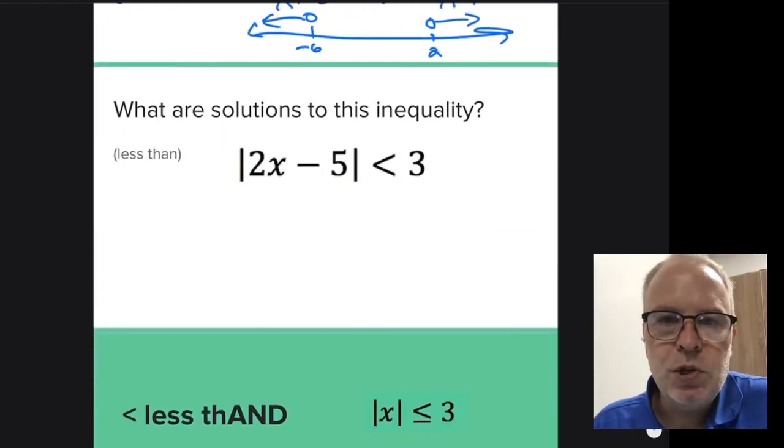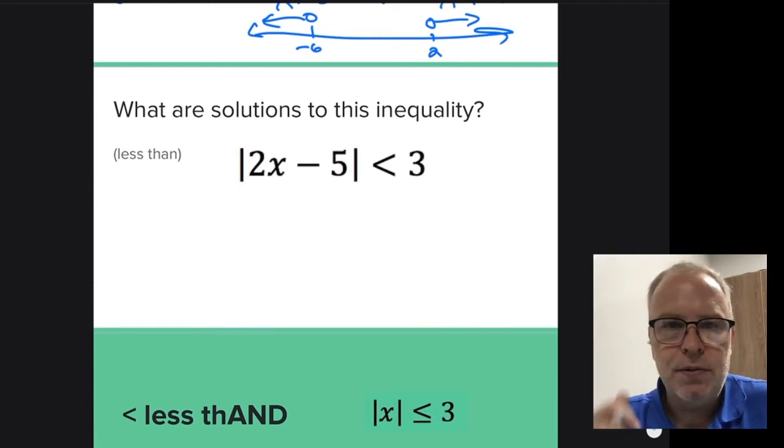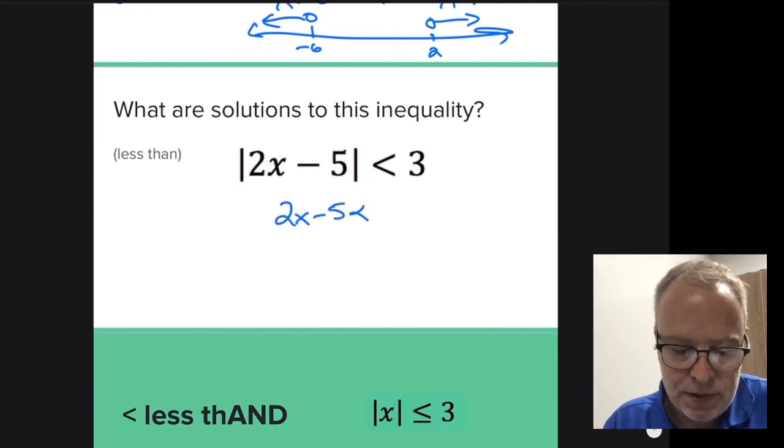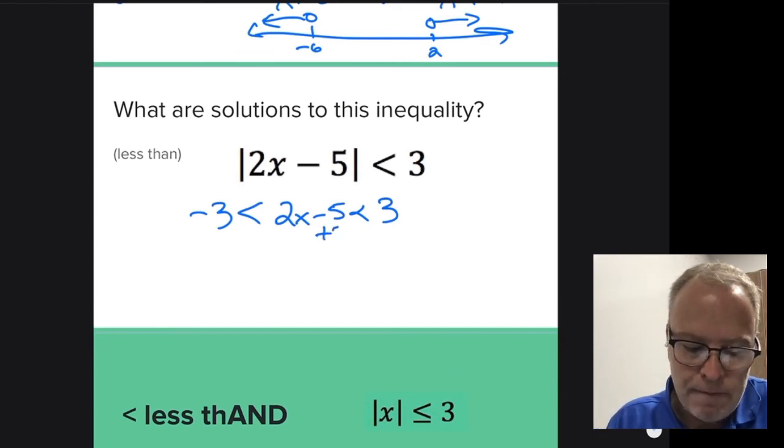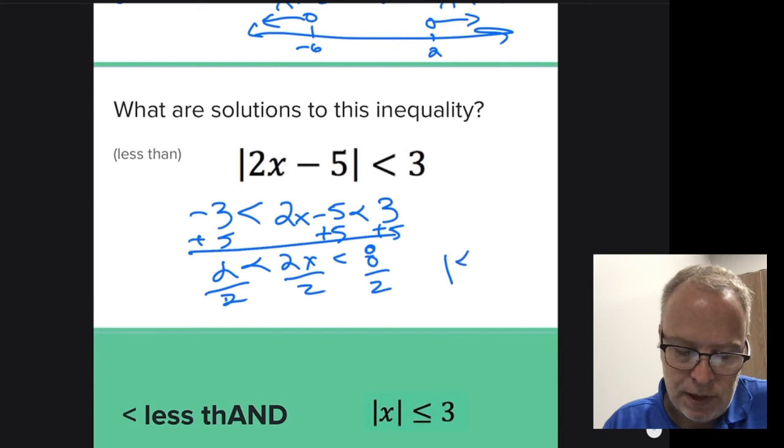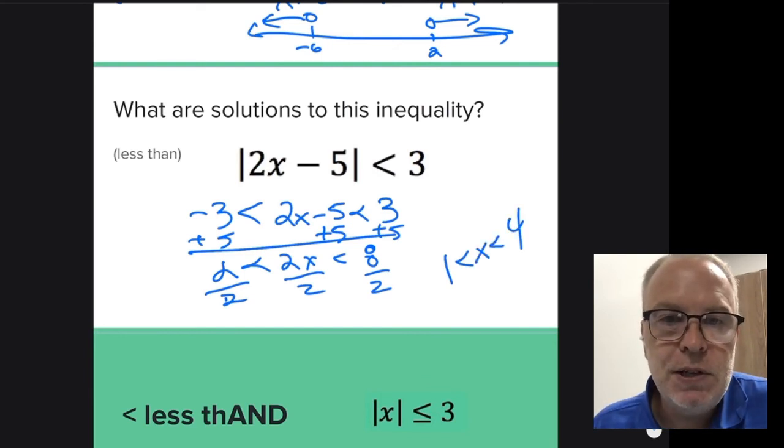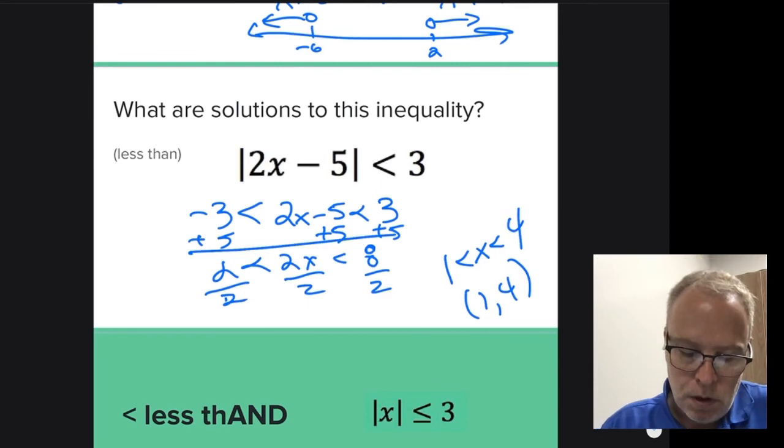Now here's a less than symbol. Remember, this was the between kind. It was like the error that I had at the machine shop. I had to stay under a certain amount of error, but it didn't matter plus or minus. So the way you set these up is like this. I got to be under three, and at the same time, this is an and question, I got to be above negative three. So I'm between negative three and three. I add five on all three sides. We talked about this last time, two is less than two x is less than eight. Divide everything by two, divide everything by two, and I get one is less than x is less than four. So x is between one and four. That would be a parenthesis one comma four in interval notation.